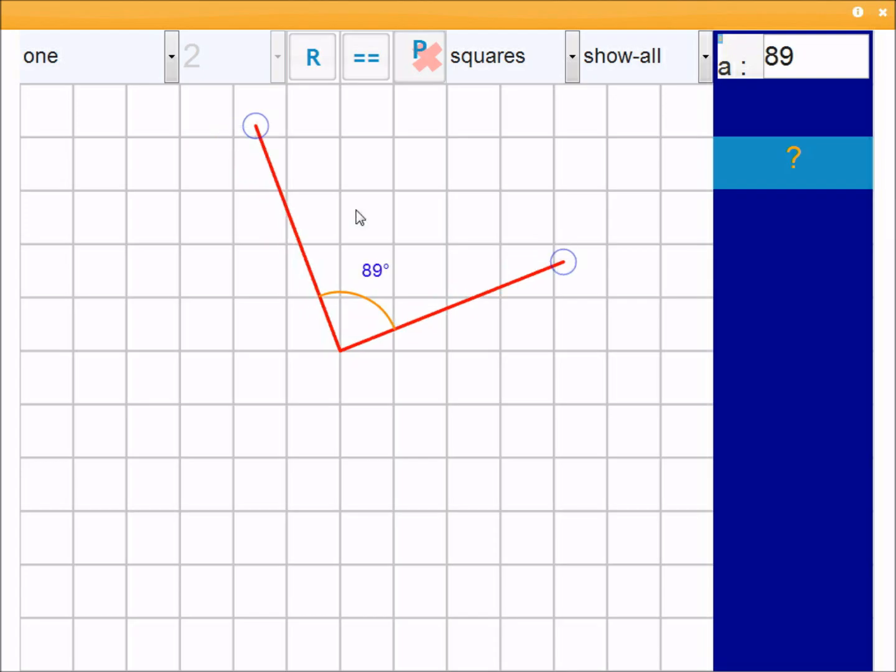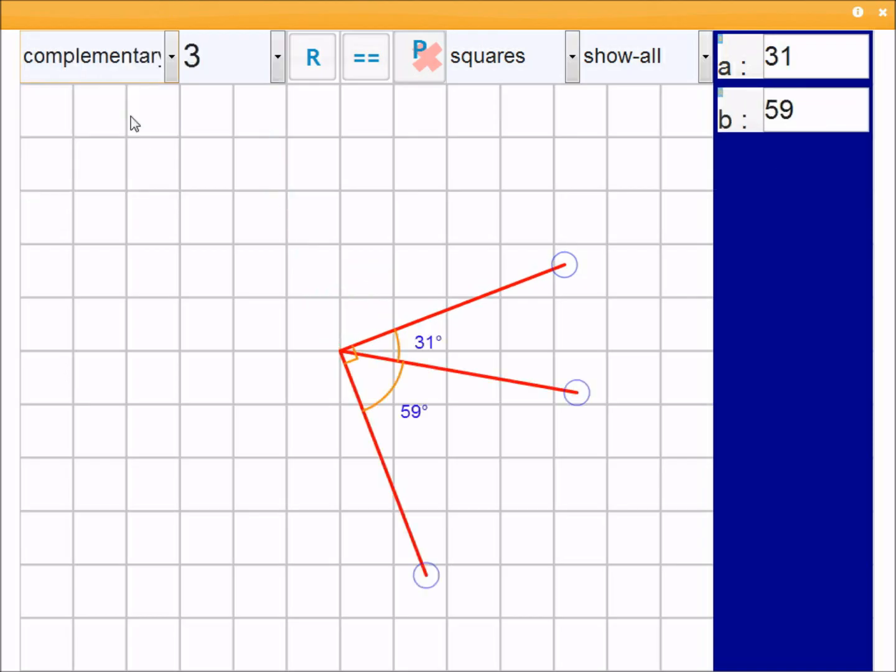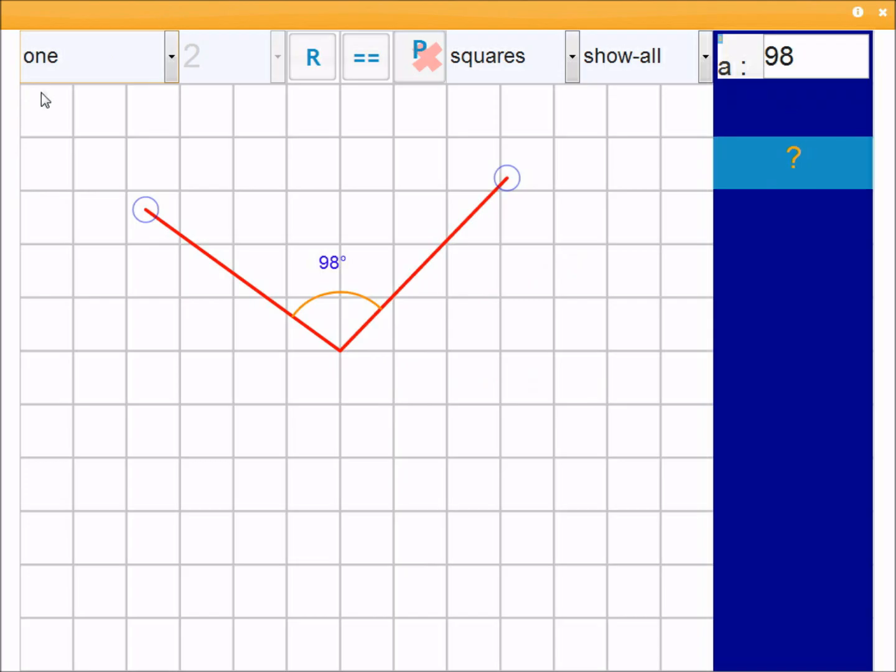So the main control in this activity is this one here. This is used to select a different type of angle. If I click complementary, you get a complementary angle. But I'm going to start with one, which is the first mode. In all the modes, you can drag the angle by clicking on the handle and moving it to change it.